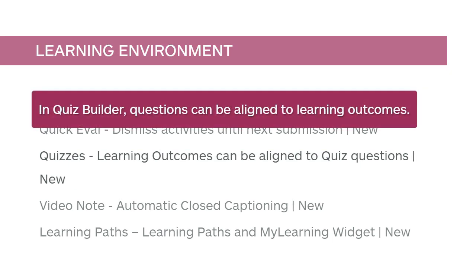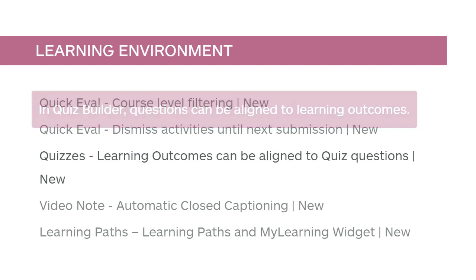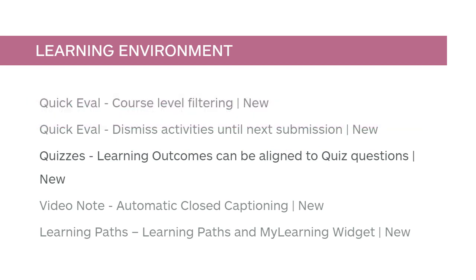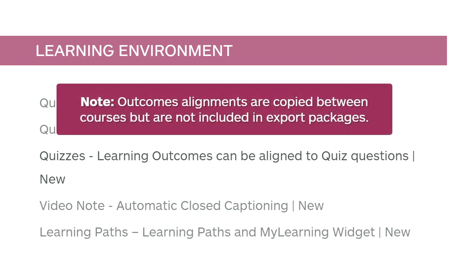In Quiz Builder, questions can be aligned to learning outcomes. Once an outcome is aligned to a question, that alignment applies to all quizzes with that question. Outcome alignments are copied between courses but are not included in export packages.